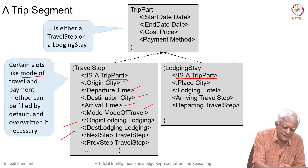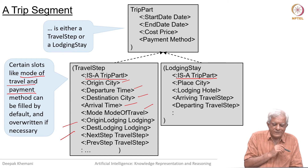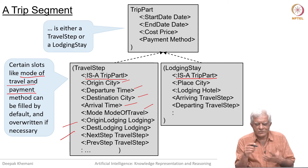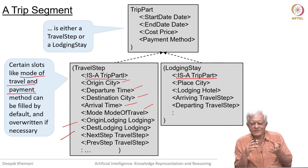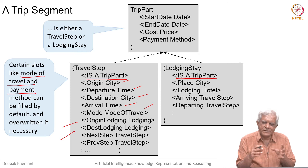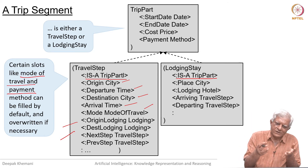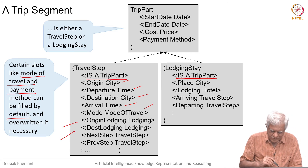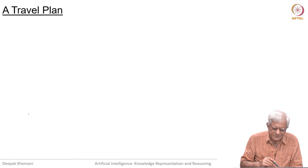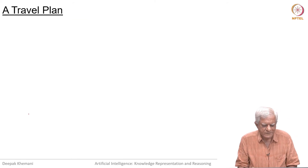Certain slots like mode of travel and payment can also be automated. For example, you could do that based on some distance: if you are traveling for a certain distance then you have to go by air, if it is very short then you can go by some other mode and so on. So they can be filled by default, but you should be allowed to override that essentially.